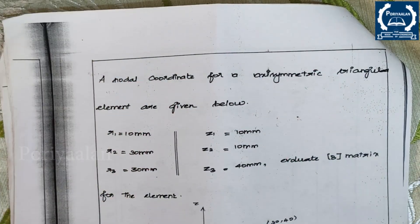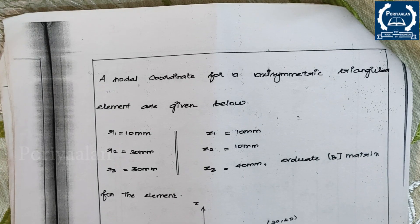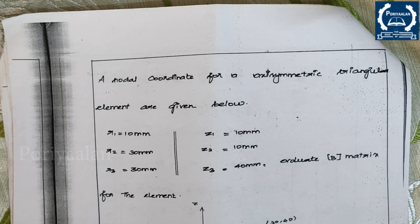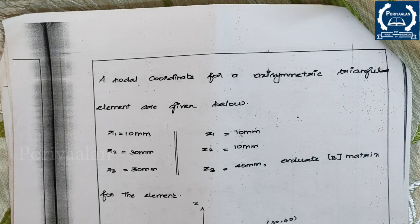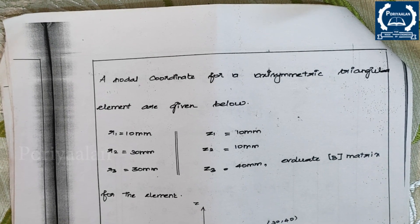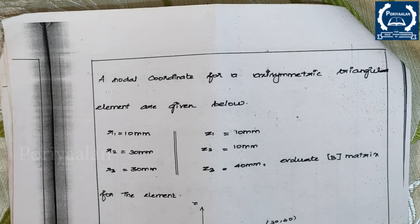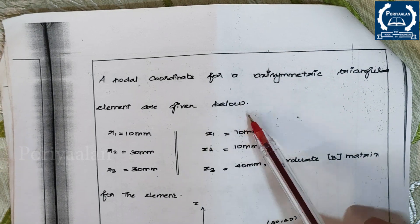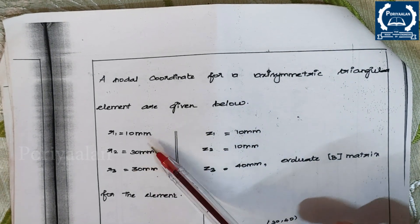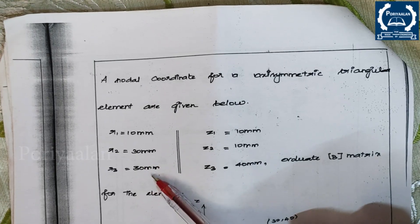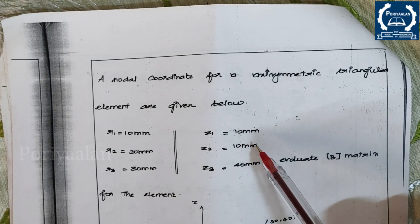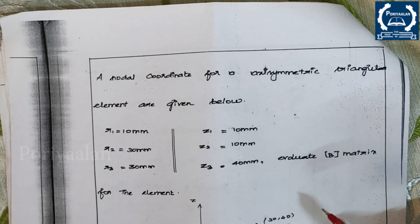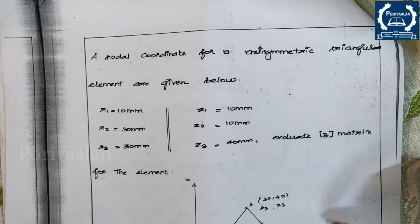Next, we discuss a problem. I will solve two types of problems: one to find the element B matrix, and one to find the stiffness matrix K. The problem states: the nodal coordinates for an Axisymmetric triangular element are given. Evaluate the B matrix. A diagram is also given showing nodes 1, 2, and 3.